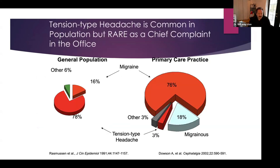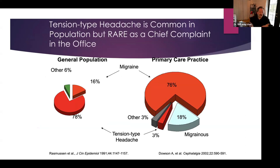Migraine is obviously very important and disabling, and that's why we're here today. What some people don't realize is that while migraine is probably the most important thing we see in clinical practice, it's not actually the most common type of headache. The most common type would be what we call tension-type headache, which by definition is usually a mild or moderate, often non-disabling headache. So the mere fact that someone is asking for help and finding their headache disabling enough to see a practitioner means the likelihood of it being migraine goes way up.